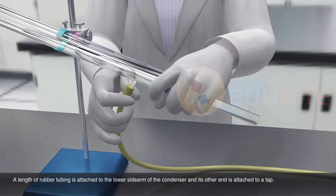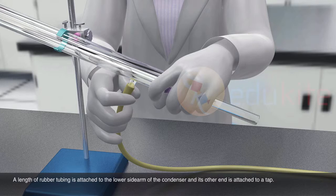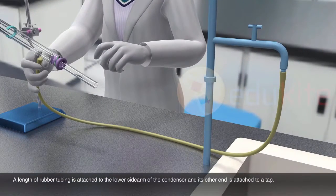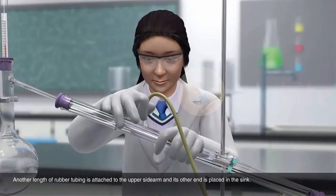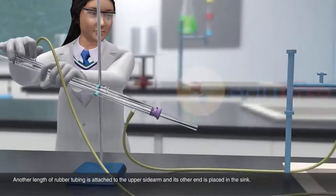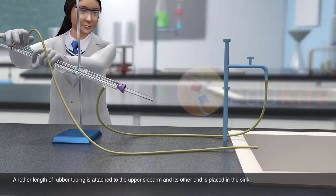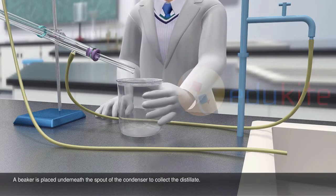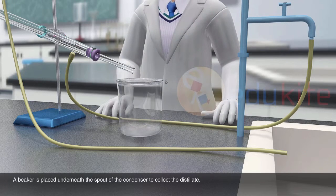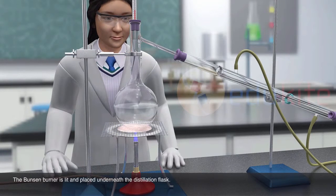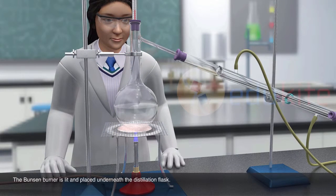A length of rubber tubing is attached to the lower side arm of the condenser and its other end is attached to a tap. Another length of rubber tubing is attached to the upper side arm and its other end is placed in the sink. A beaker is placed underneath the spout of the condenser to collect the distillate. The Bunsen burner is lit and placed underneath the distillation flask.